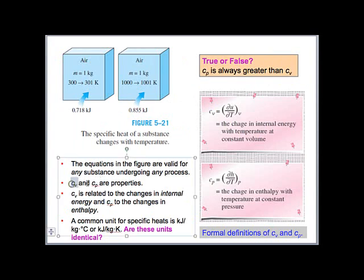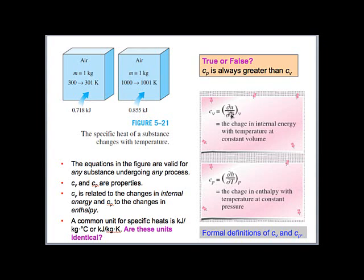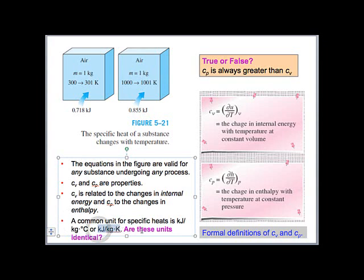Mathematically, cv is defined as the partial derivative of internal energy with respect to temperature at constant volume. These are written as partial derivatives because internal energy may be a function of more than just temperature — it may depend on other variables. The units are kilojoules per kilogram per degree Kelvin, or equivalently kilojoules per kilogram per degree Celsius.